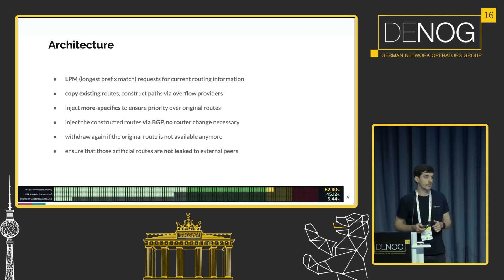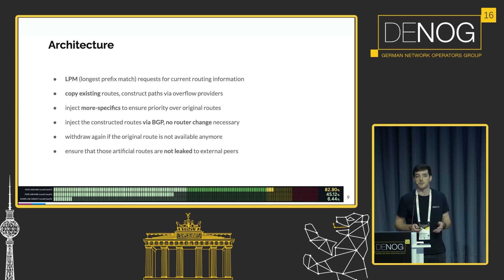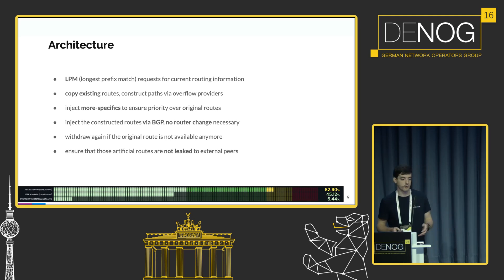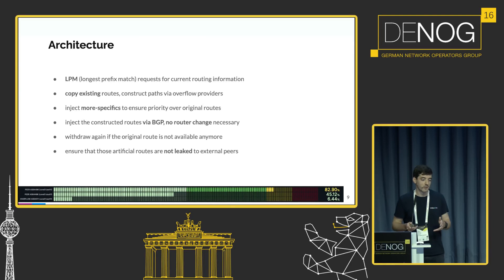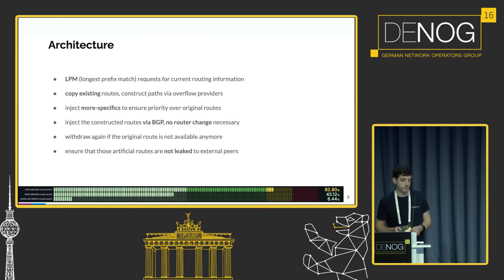It's very important to withdraw those routes again if the underlying topology has changed — if interfaces are down or anything like that. And, also important, we make sure that we do not leak those generated prefixes.